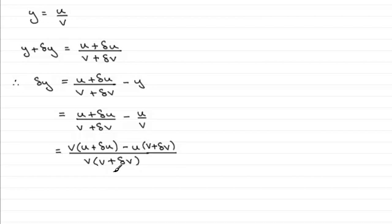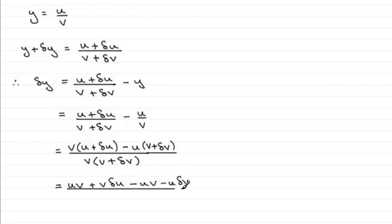Expanding the brackets, we get uv plus v·delta u, then minus uv minus u·delta v, all divided by v multiplied by v plus delta v. I can see this simplifies further because the two uv terms cancel, giving delta y equals v·delta u minus u·delta v, all over v times v plus delta v.